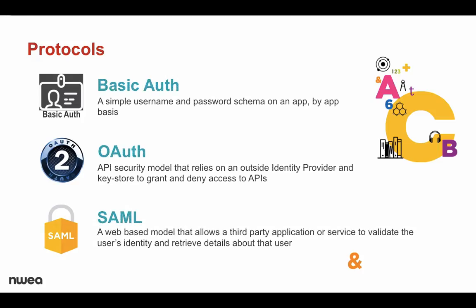One of the places we get tripped up when talking about SSO is we get confused with the concept of single sign-on and the different kinds of protocols we can use to create a single sign-on experience. The three main ways that we log into systems today are basic authorization — a basic username and password that we've been using since the beginning of the Internet — OAuth, which is structured around API security, and SAML, which is structured around web applications and allowing us to interact with third-party applications that we may not even trust in any other way.